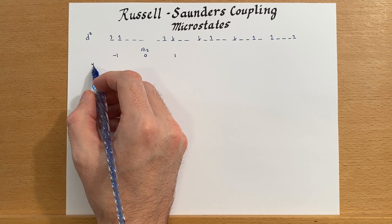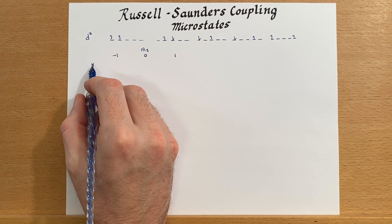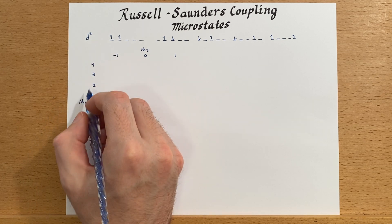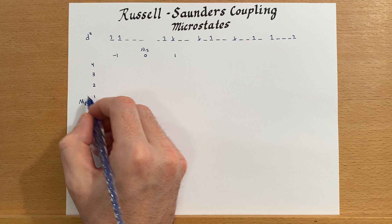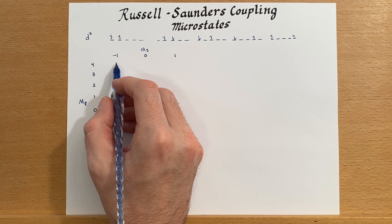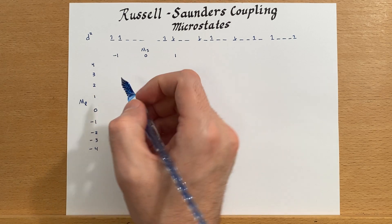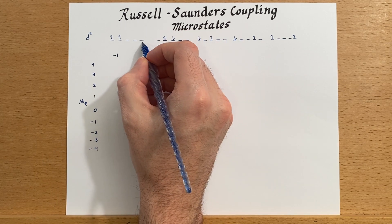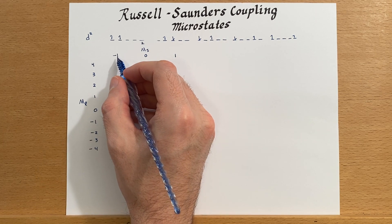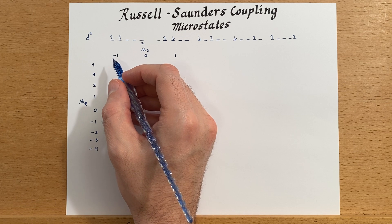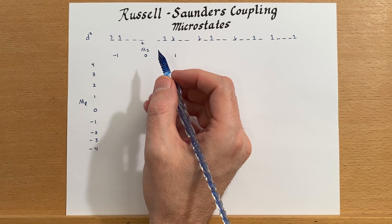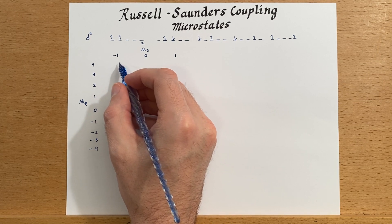We have a chart that we can now fill out with the possible states. Starting with total m_l = 4: it's not possible to have m_s = −1 there, because both electrons would have to be in the m_l = +2 orbital and both spin-down, giving two electrons with the same quantum numbers — that's not allowed. So there is no state in that cell.